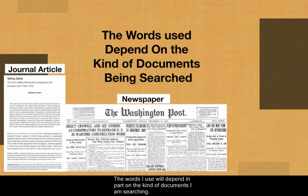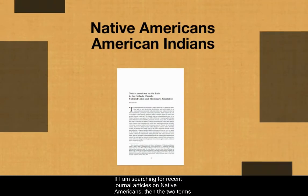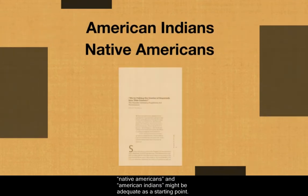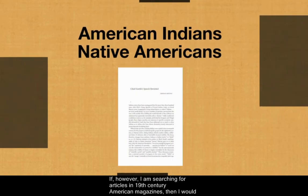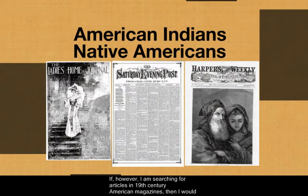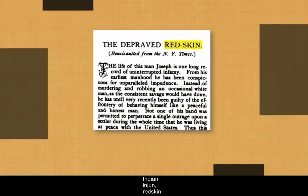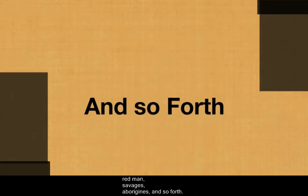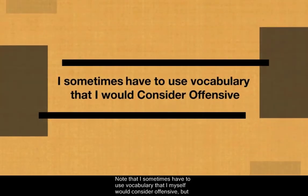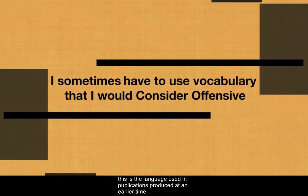The words I use will depend in part on the kind of documents I am searching. If I am searching for recent journal articles on Native Americans, then the two terms Native Americans and American Indians might be adequate as a starting point. If, however, I am searching for articles in 19th century American magazines, then I would use different terms to represent my topic — terms like Indian, Injun, Redskin, Redman, Savages, Aborigines, and so forth. Note that I sometimes have to use vocabulary that I myself would consider offensive, but this is the language used in publications produced at an earlier time.